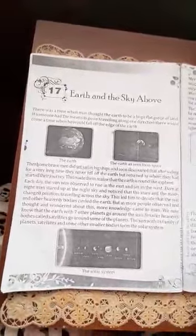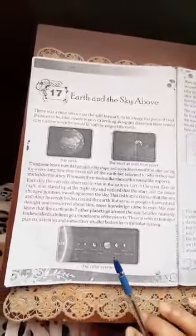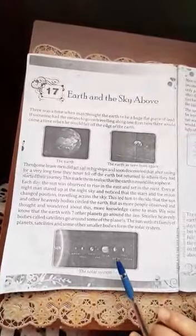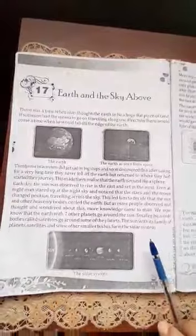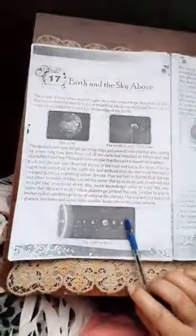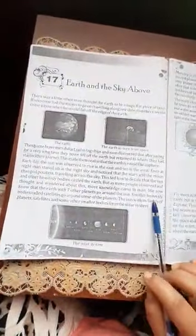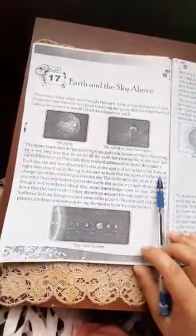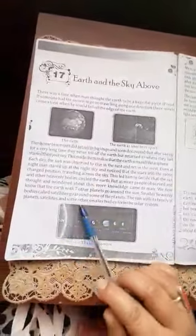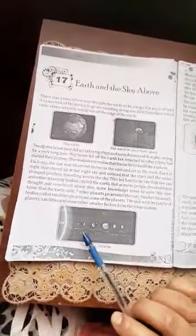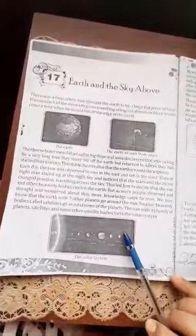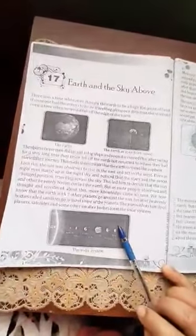In previous times, before we knew that the Earth with its seven other planets rotates around the sun, people thought that the sun and other heavenly bodies like the moon and stars rotated around the Earth. But actually, that was not true.